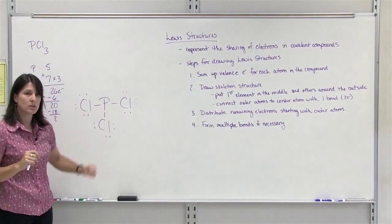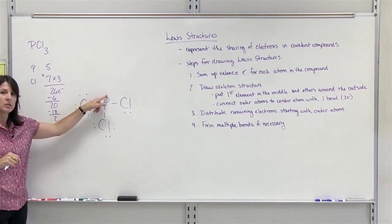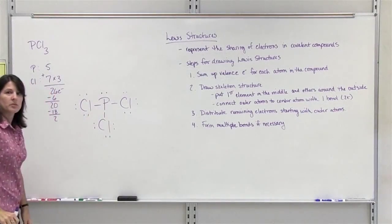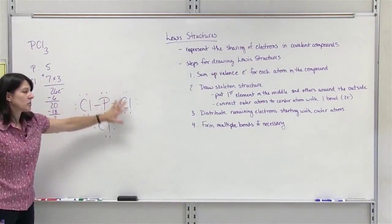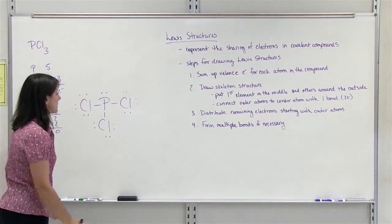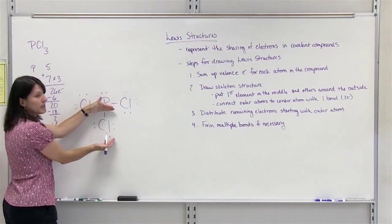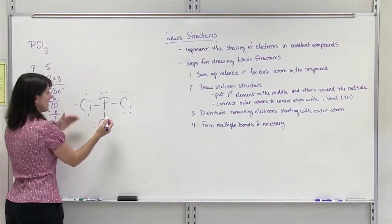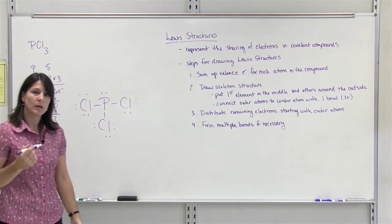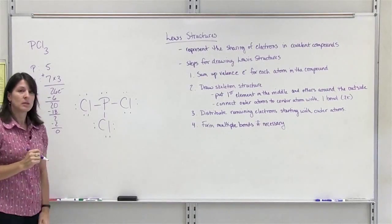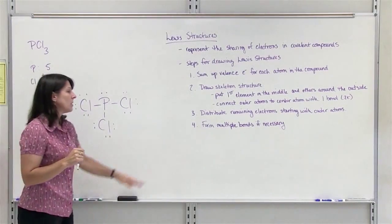We have already given electrons to all the outer atoms to fulfill the octet. Any that are left over at this point go to the center atom, so we give these 2 electrons to phosphorus. We have now used all of our electrons. Checking: each chlorine has all 8 electrons. Phosphorus has 2, 4, 6 from bonds and 2 as a lone pair — so it has 8 as well. This is the complete Lewis structure for phosphorus trichloride.